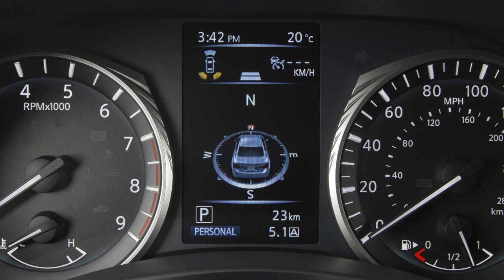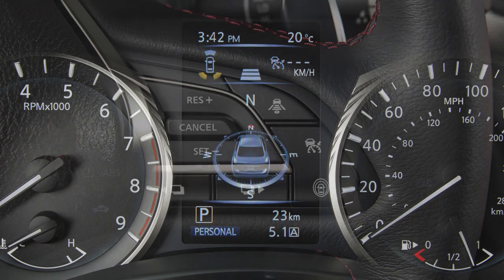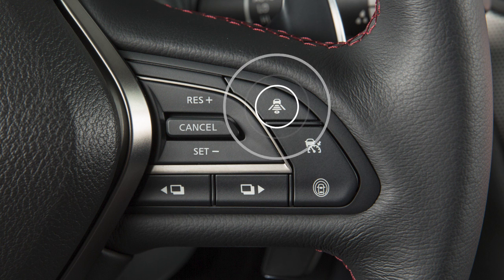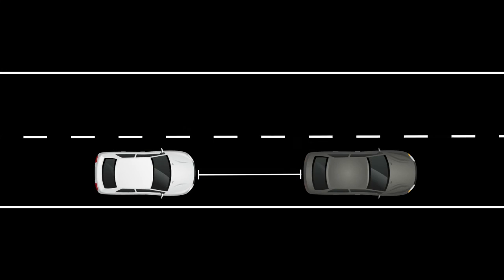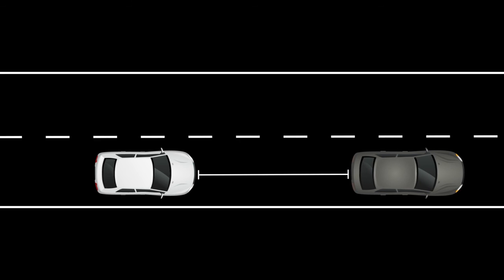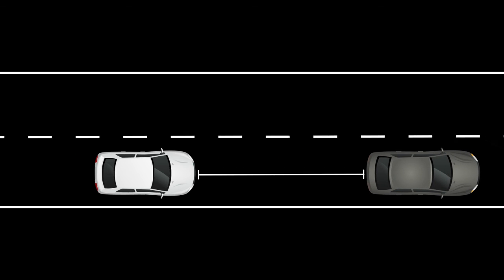There are three different distance settings that can be used: Long, Middle, and Short. The system starts in Long, and by pushing this switch, you can cycle through the other distance options. The distance to the vehicle ahead depends on speed, so the higher the speed, the further the distance.